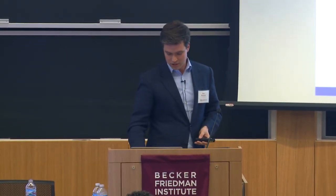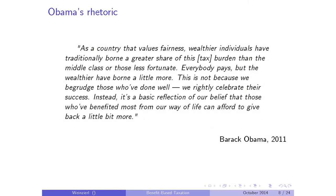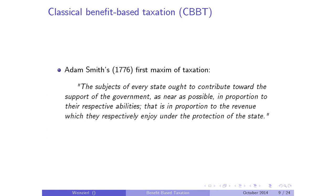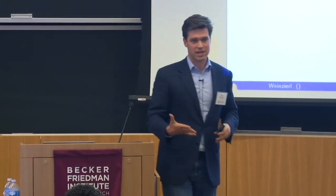The quote that actually started me writing the paper is how Obama talked about it in 2011. He's talking about why he wants more progressive taxation, and the key sentence is: 'It's a basic reflection of our belief that those who've benefited most from our way of life can afford to give back a little bit more.' He's a rarity among presidents in clarity of expressing philosophical ideas—you've benefited a lot, you're able to pay more, and you should therefore do so. You can go way back too: Adam Smith's first maxim is essentially this—people should pay taxes in proportion to their abilities, that is, in proportion to the revenue they enjoy under the protection of the state. The only point I'm trying to make is that this intuition matters for how we make tax policy, at least in the United States.